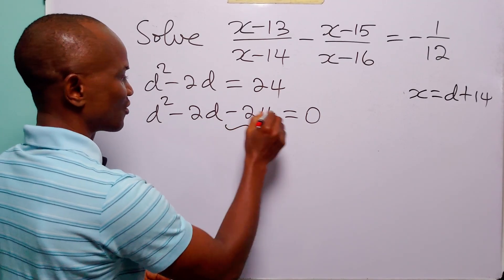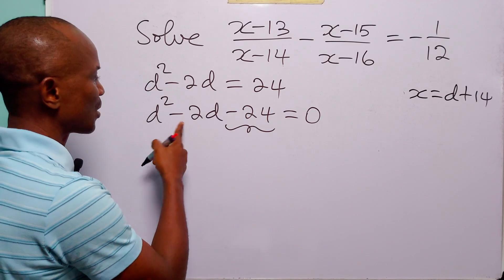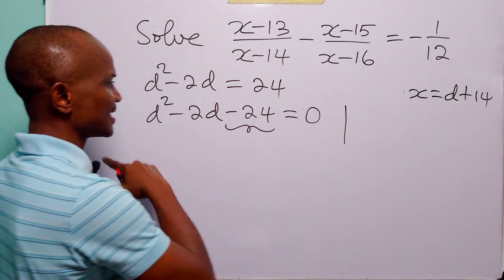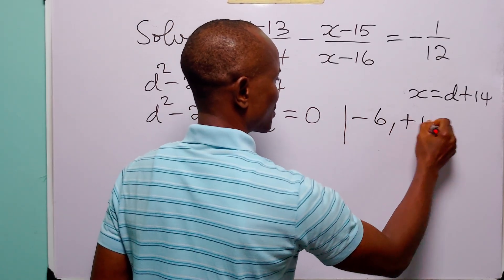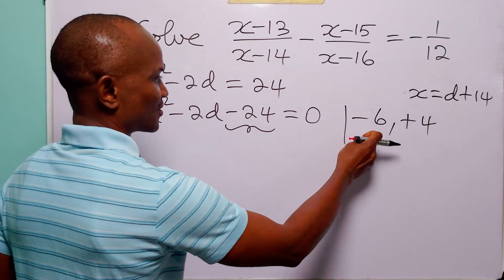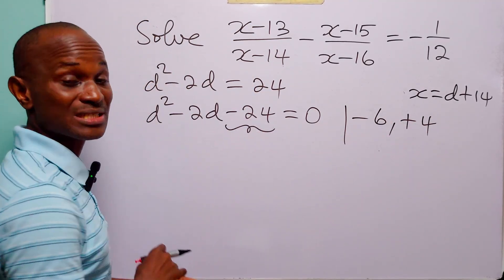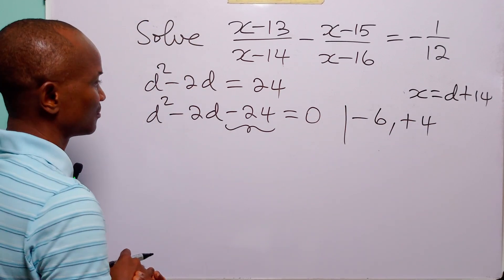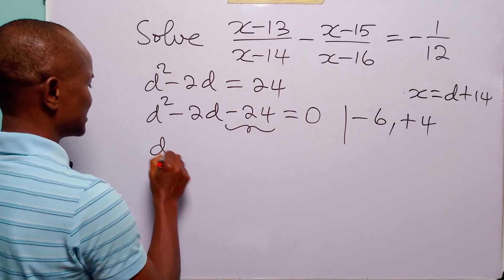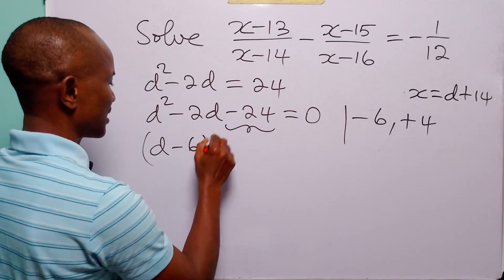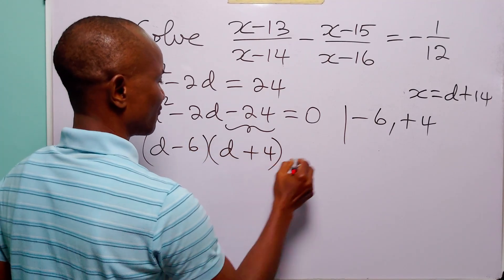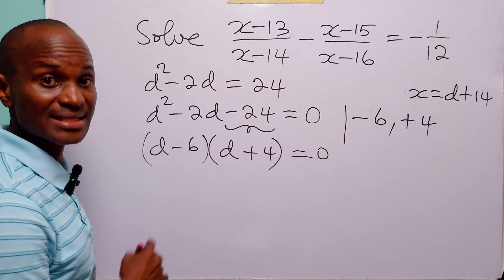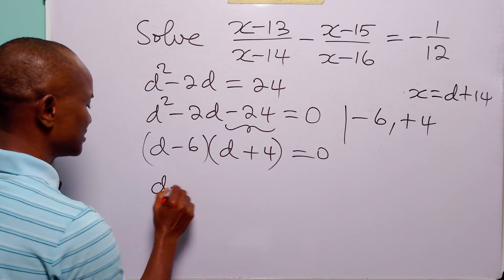We can factorize this quadratic equation. All we have to do is find the factors of minus 24 that add up to minus 2. That is going to be minus 6 and plus 4, because minus 6 times plus 4 gives minus 24, while minus 6 plus 4 gives minus 2. So the factors are d minus 6 and d plus 4, and this equals 0.